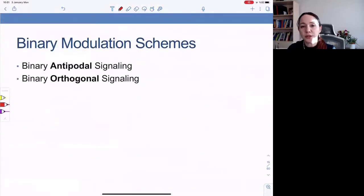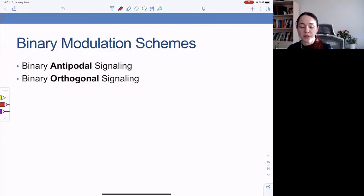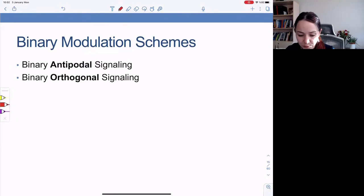Now that we understand basis functions for our signal space, we're going to study two special cases for binary signaling. We're going from M-ary back to binary, where M equals two — sending one bit at a time. Antipodal signaling and orthogonal signaling are two possible cases.